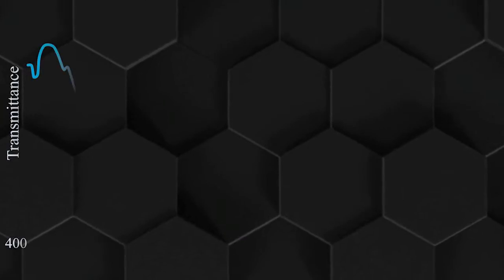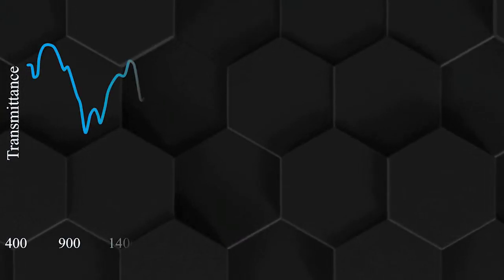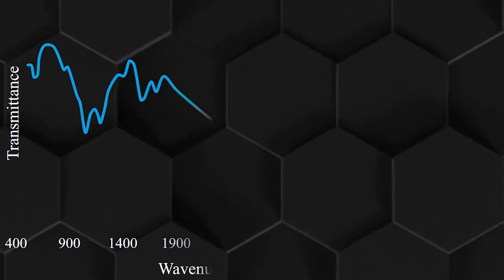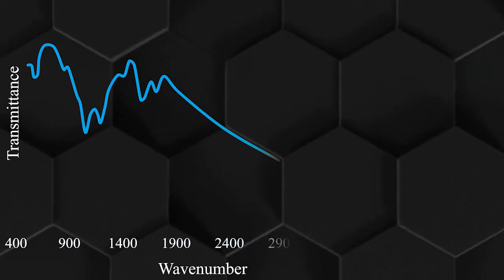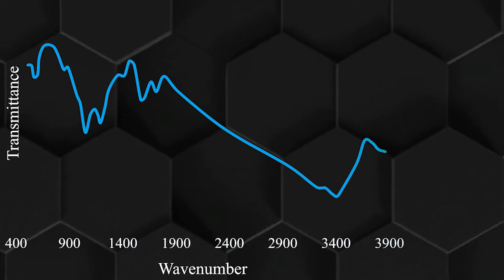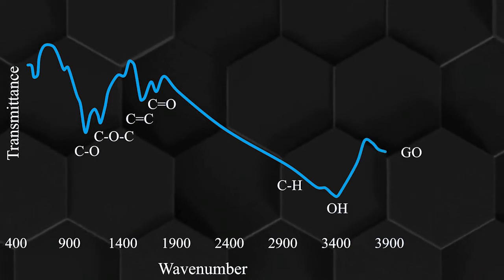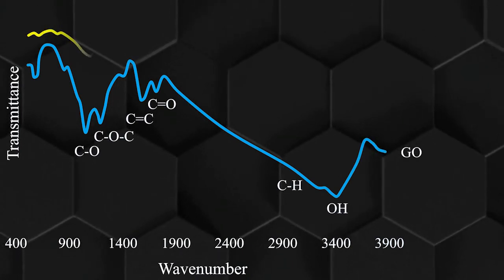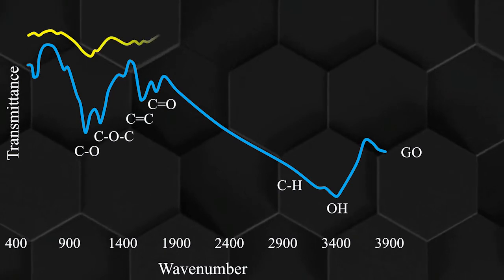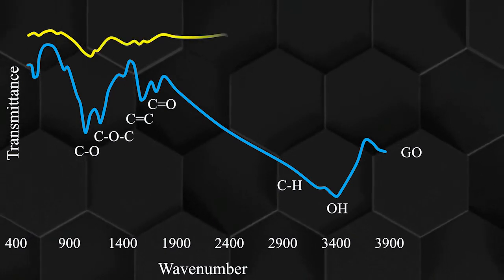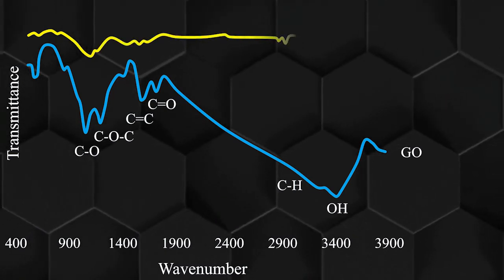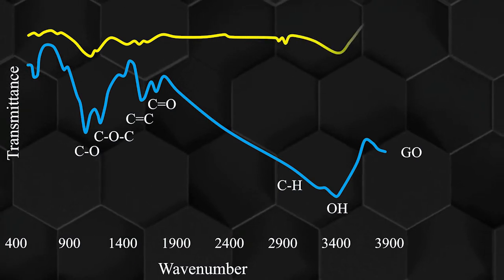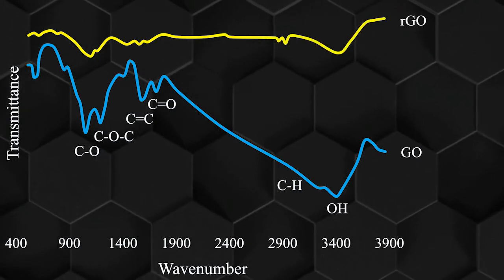According to the Fourier transform infrared spectroscopy, the peaks at 1055, 1230, 1395, 1620, and 1730 were related to the stretching vibration of CO bonds, stretching vibration of COH bonds, deformation vibration of COH bonds, stretching vibration of CC bonds, and stretching vibration of CO bonds in graphene oxide, respectively.